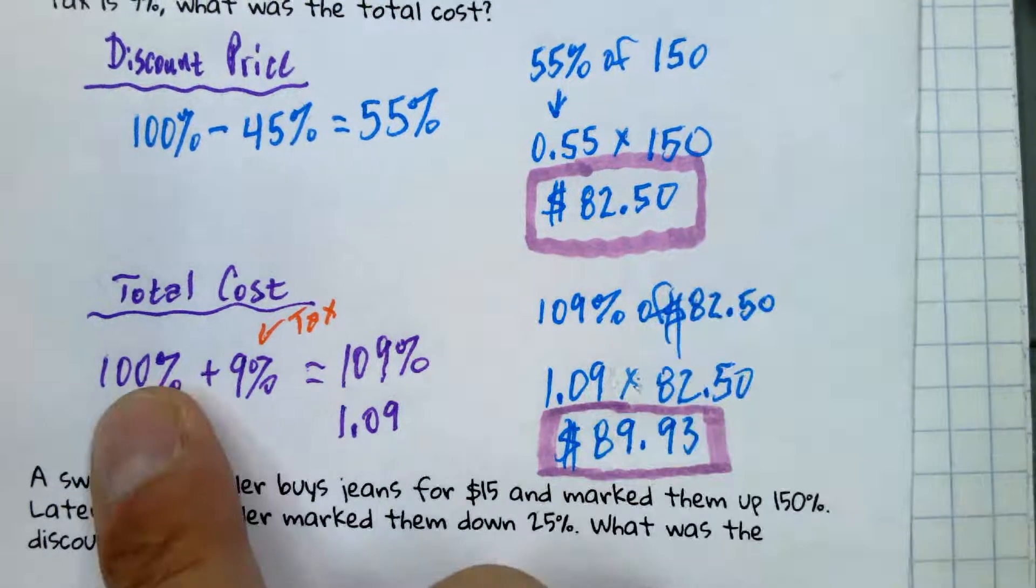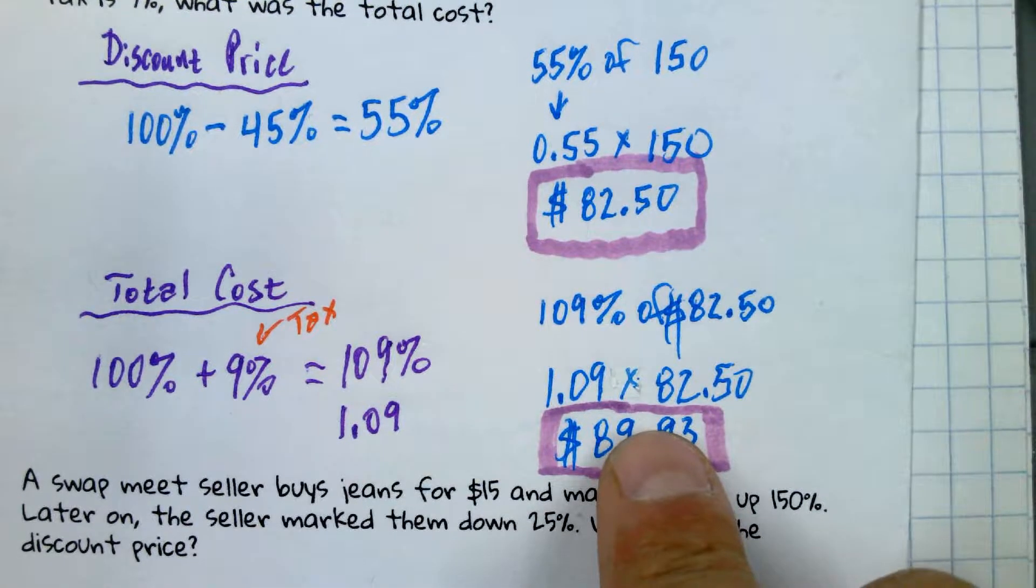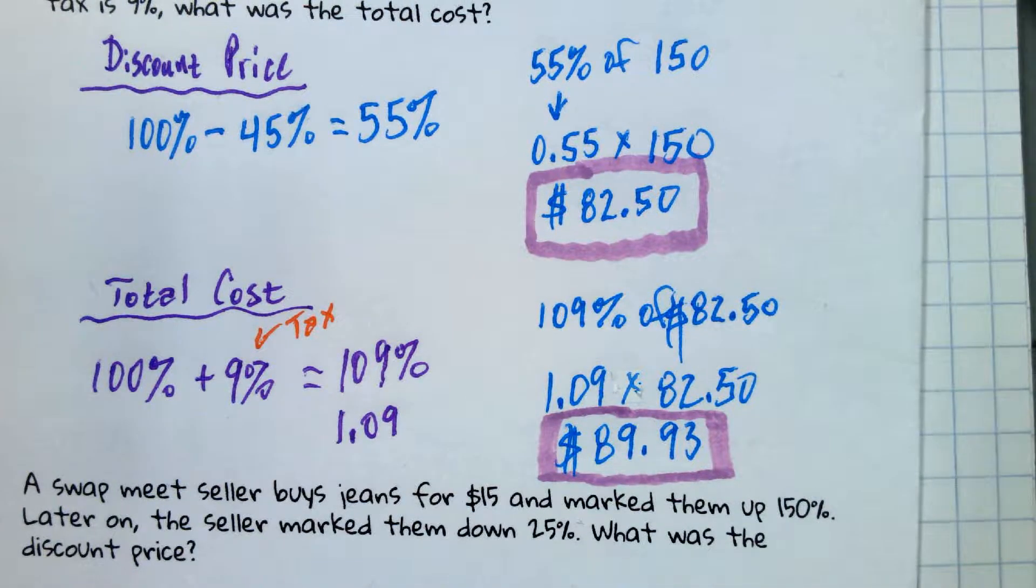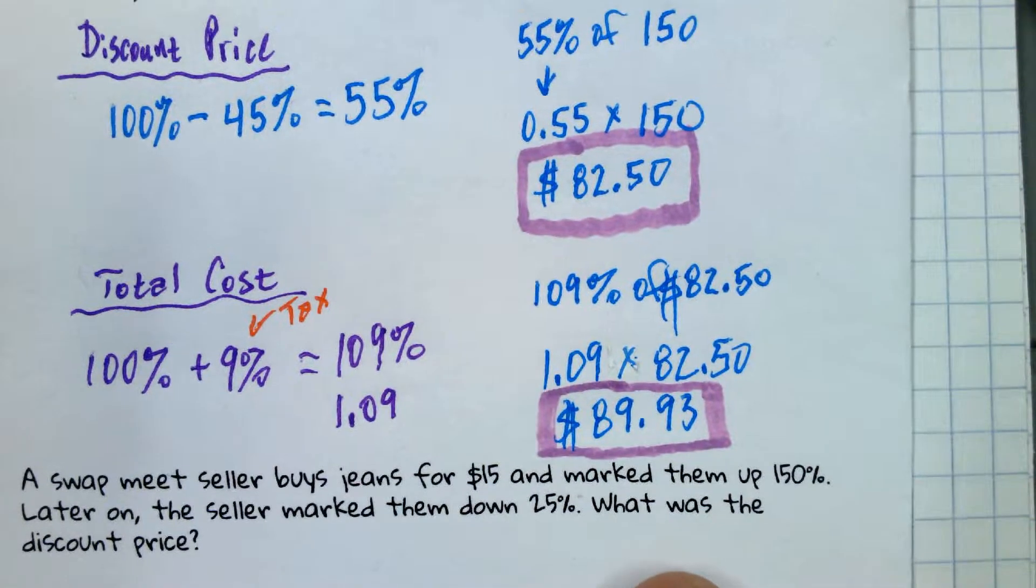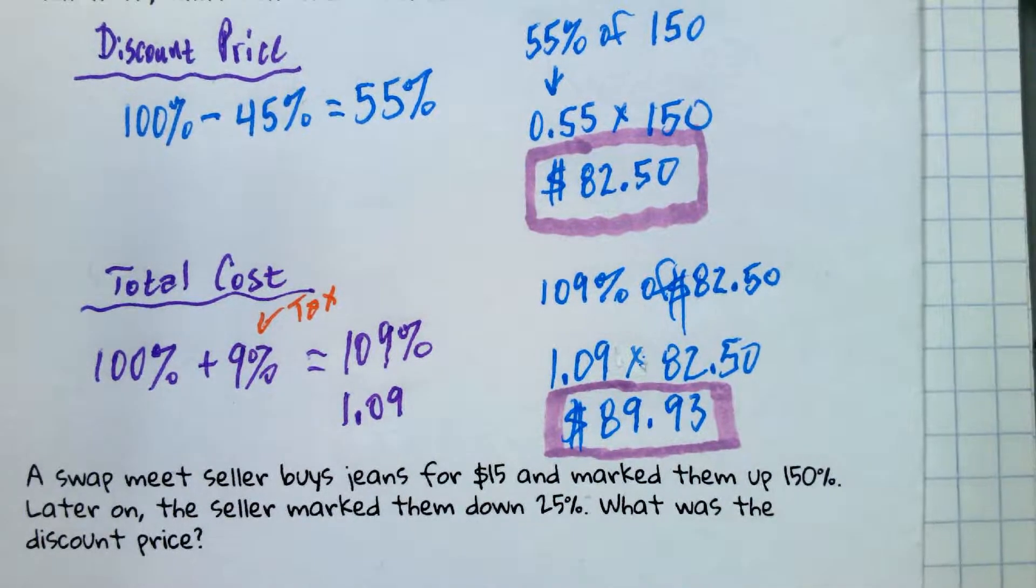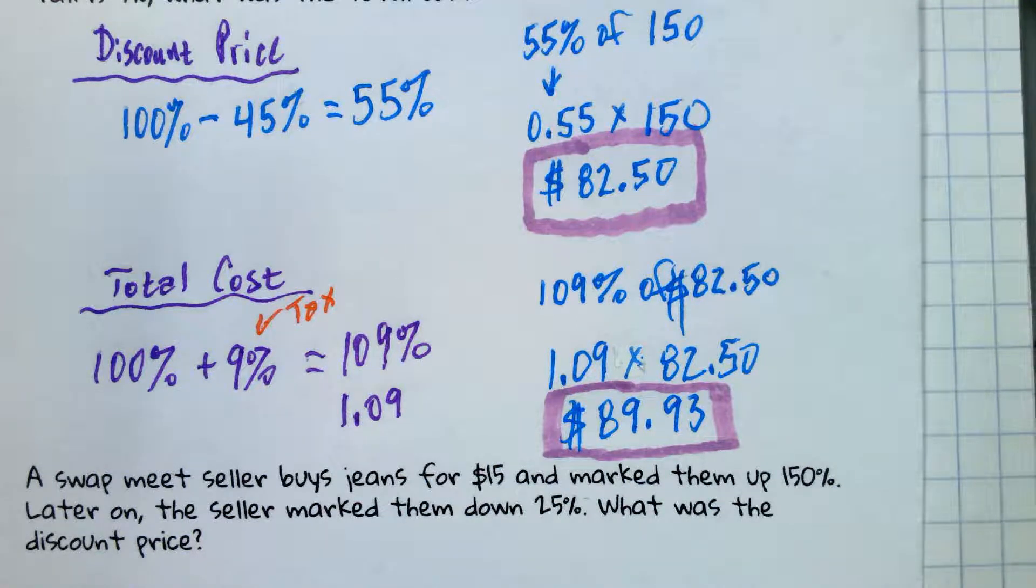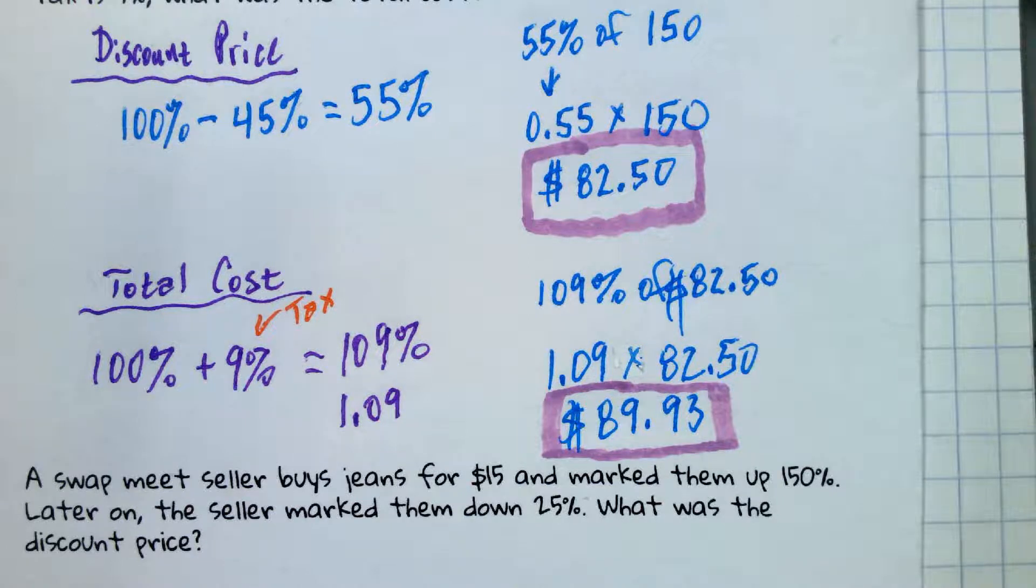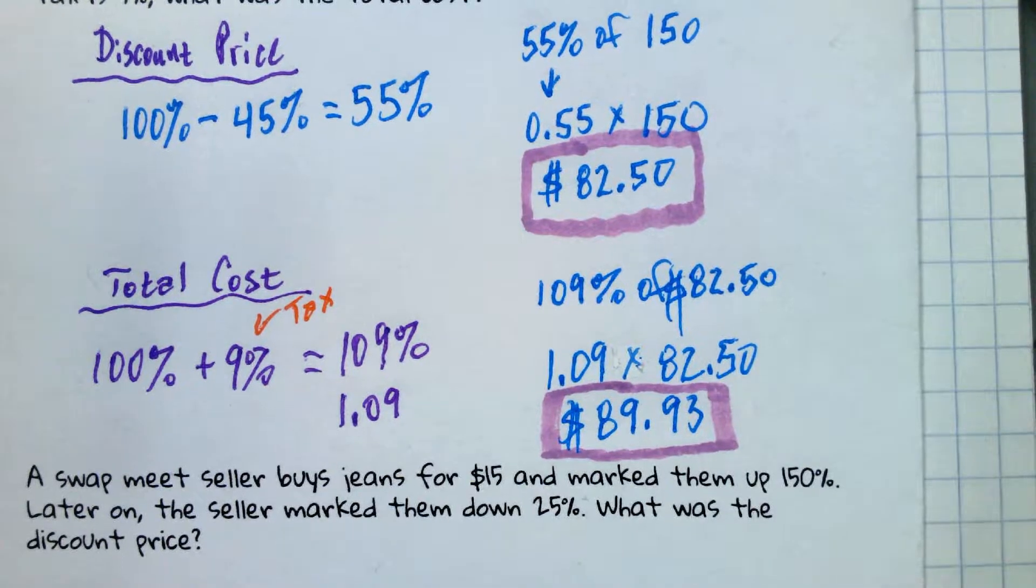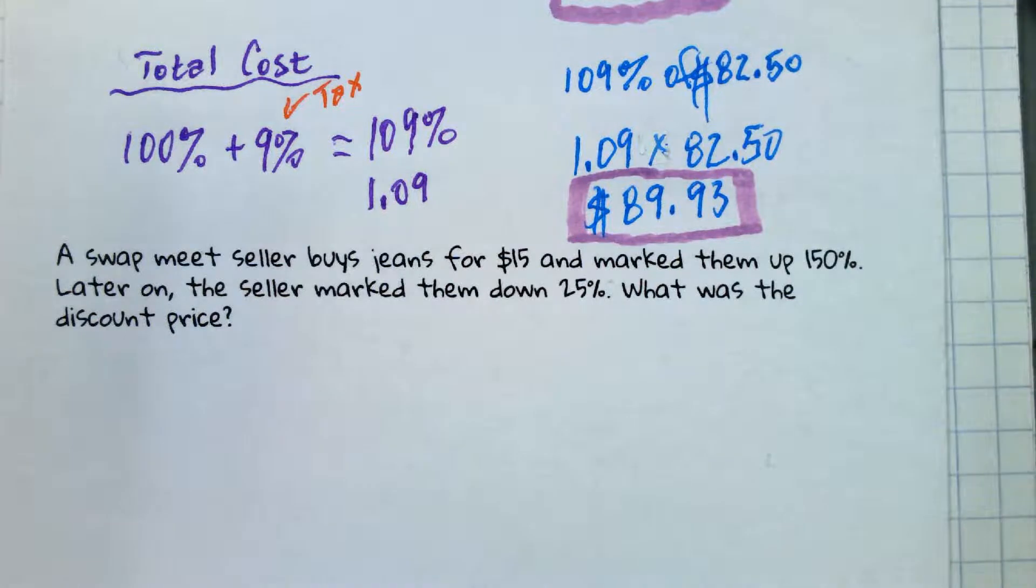Here it worked because they didn't ask us to find the discount. They wanted us to get the total with the discount. And here they didn't ask us how much the tax was. They asked us to find the total with the tax. So let's see if we can't apply that here. We have a swap meet seller. David, would you read that for us? A swap meet seller buys jeans for $15 and marked them up 150%. Later on, the seller marks them down 25%. What was the discounted price?